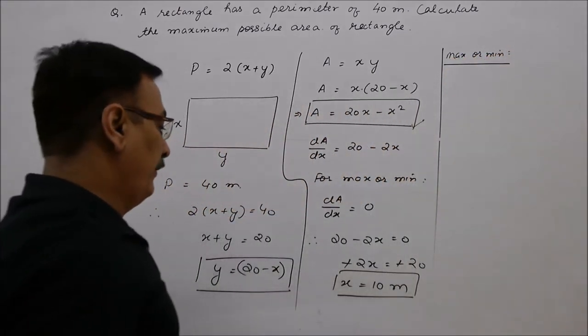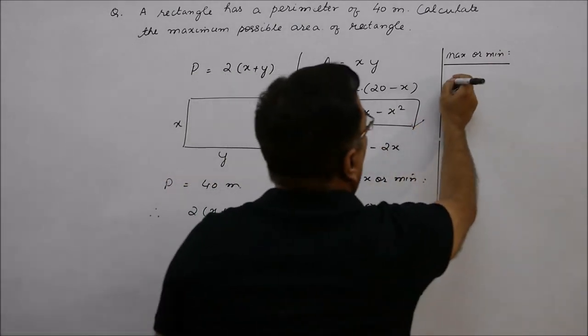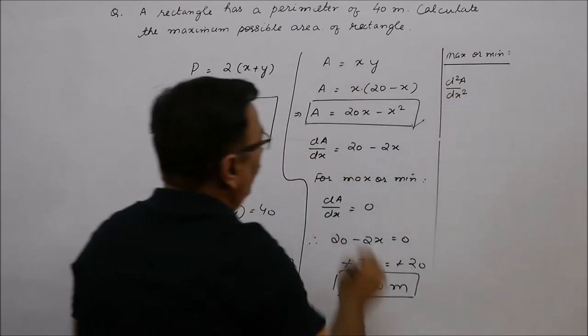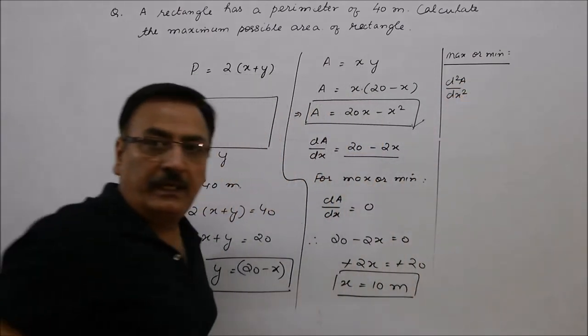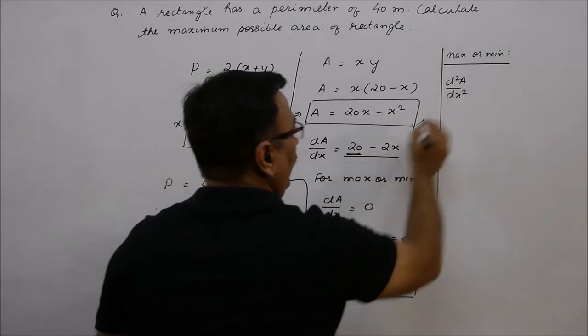So, for maximum and minimum, what do we need to do? Double derivative. Find d squared A over dx squared. This means that we need to differentiate this. So, when we differentiate this, the constant derivative is zero.